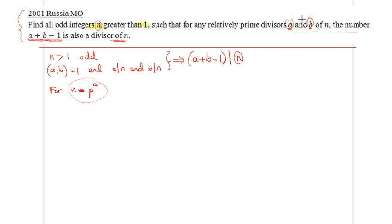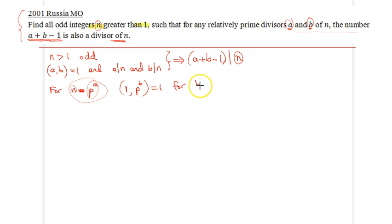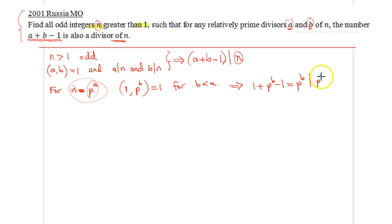Two relatively prime divisors of n, namely p to the a-th power, would simply be of the forms 1 and p to the power b, so gcd equals 1, for b strictly less than a. This will immediately imply that 1 plus p^b minus 1 is simply p^b, and p^b definitely divides p^a because b is strictly less than a. So for all prime powers, the given condition is satisfied.